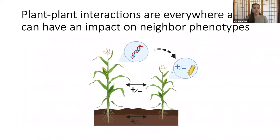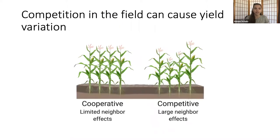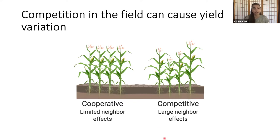Plant-to-plant interactions are everywhere within the field, and they can have an impact on neighboring phenotypes. For instance, competition within the field could cause extensive yield variation. If you have more cooperative plants in a uniform stand, you would see limited neighbor effects, versus if you have more competitive plants, you're going to have a more uneven stand and larger neighbor effects, which could impact yield variation.